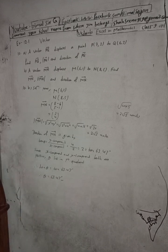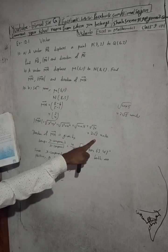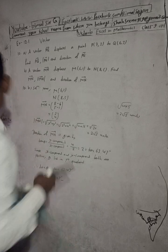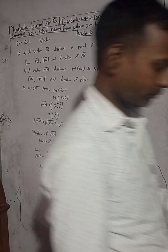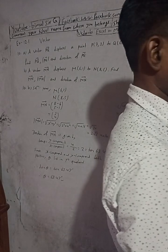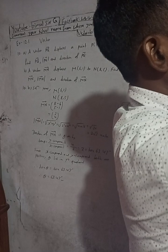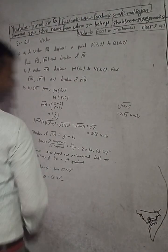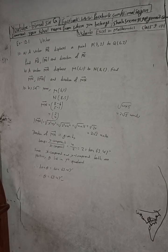The answer in the book is: PQ vector equals (-2, 4), magnitude equals 2 root 5, and direction is 63.43 degrees. If you like the videos, please try to share with your friends. See you in the next video. Thank you.